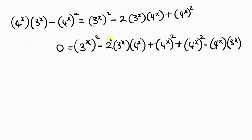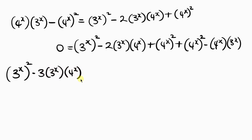Writing everything on the right side equated to 0: we have 3 to power x raised to power 2. Now checking for like terms — this is negative 2 of 3 to power x times 4 to power x, and moving the other term gives a coefficient of negative 1. So negative 2 minus 1 gives negative 3 times 3 to power x times 4 to power x. Then we have 2 terms of 4 to power x squared, giving 2 times 4 to power x raised to power 2, equal to 0.